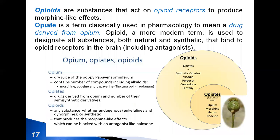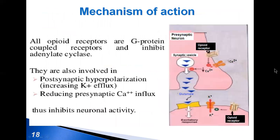Opioids are substances that act on opioid receptors to produce morphine-like effects. Opiate is a term classically used in pharmacology to mean a drug derived from opium. Activation of the opioid receptor decreases calcium influx in response to an incoming action potential, which decreases release of excitatory neurotransmitters such as glutamate. Activation also increases potassium efflux and decreases the response of the post-synaptic neuron to excitatory neurotransmitters.